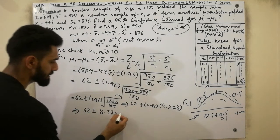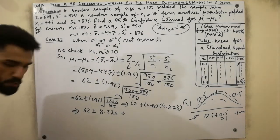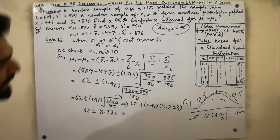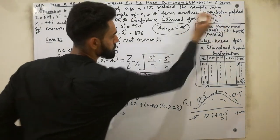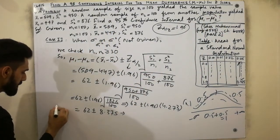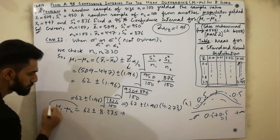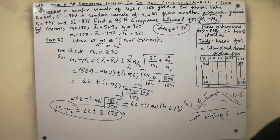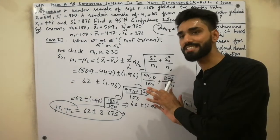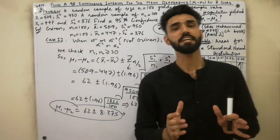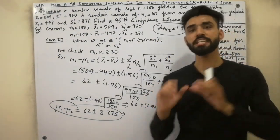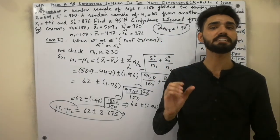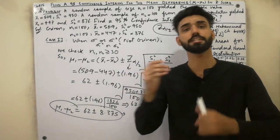So we have calculated the 95% confidence interval for μ1 minus μ2. I hope that you have clearly understood the solution. Thanks for watching the video. If you like this video then please subscribe to my YouTube channel and press the bell icon to get notifications of my new lectures. Goodbye!